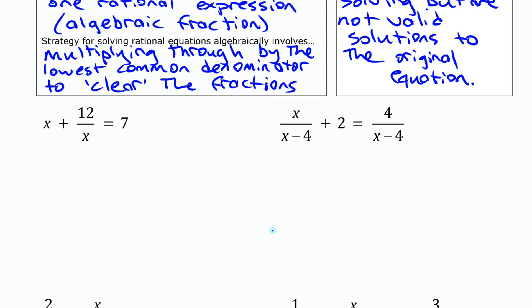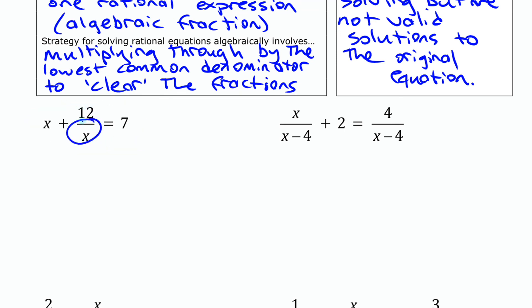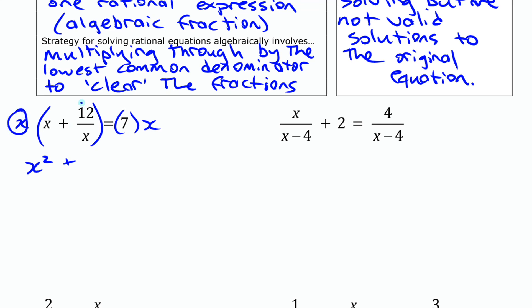This first equation has one rational expression with x on the bottom as the denominator. The key step is to clear out that fraction by multiplying both sides by x. If we multiply both sides by x, we get x squared, and x times 12 over x — the x's cancel and you just get 12, clearing out that fraction. On the other side you get 7x.